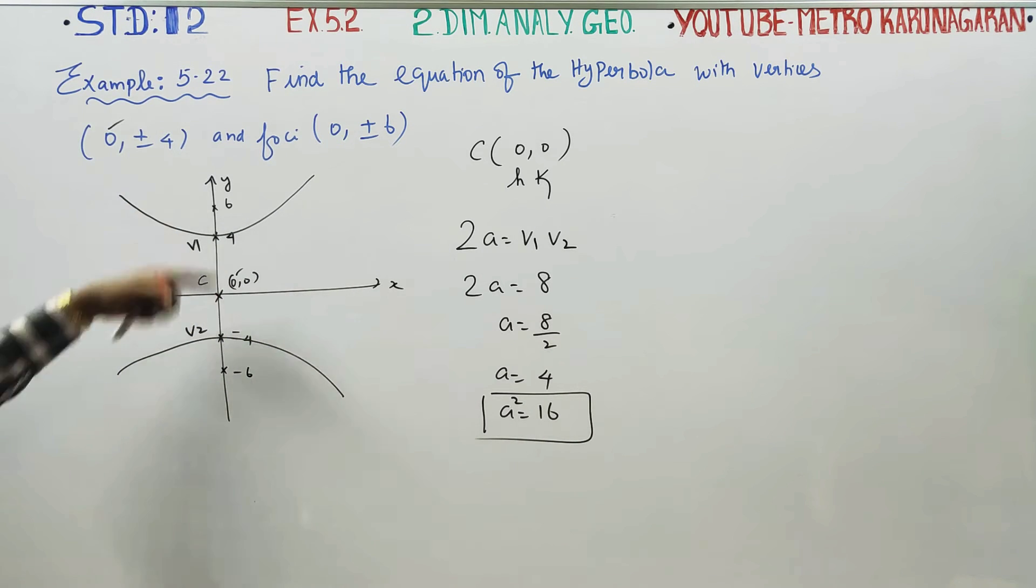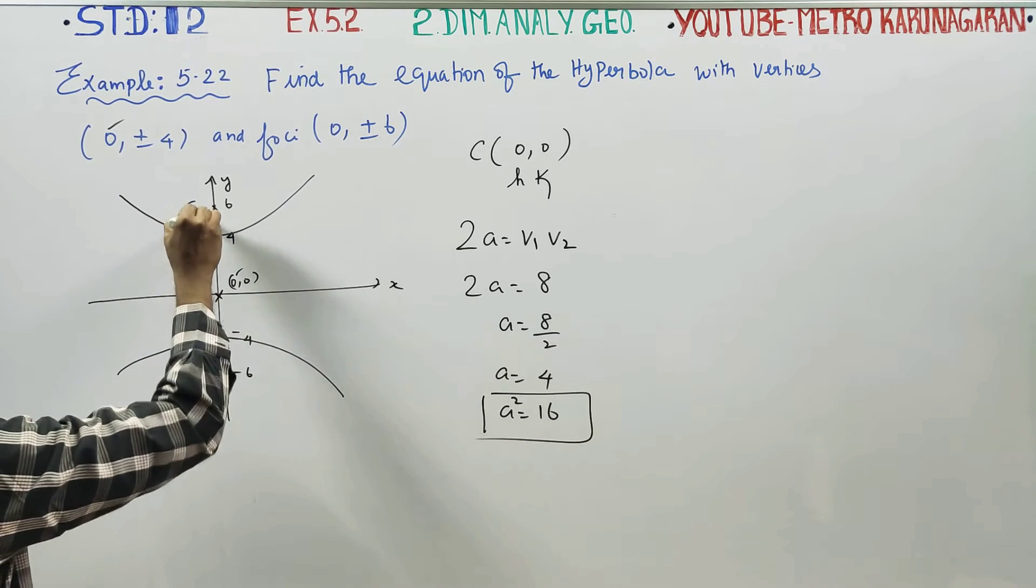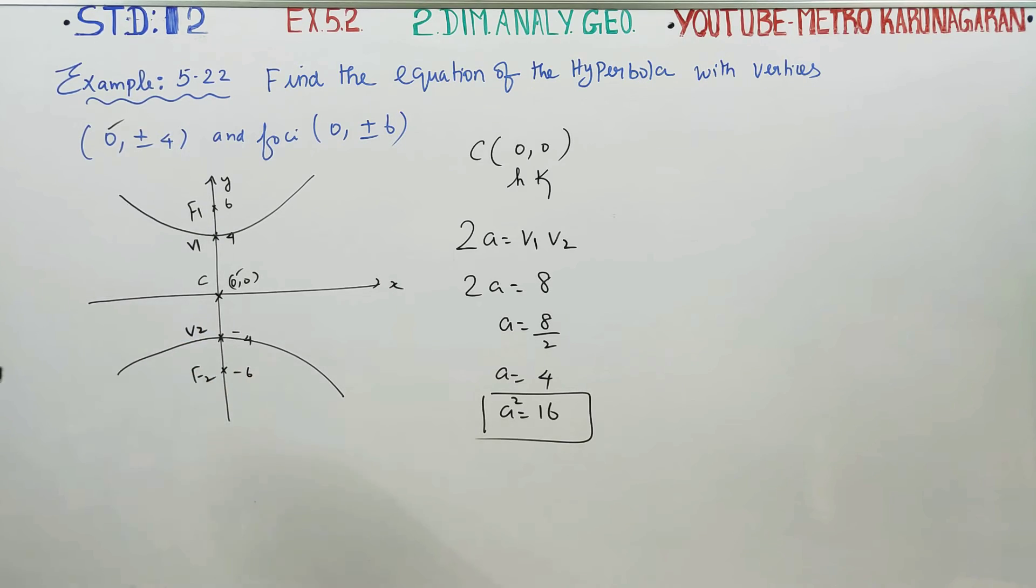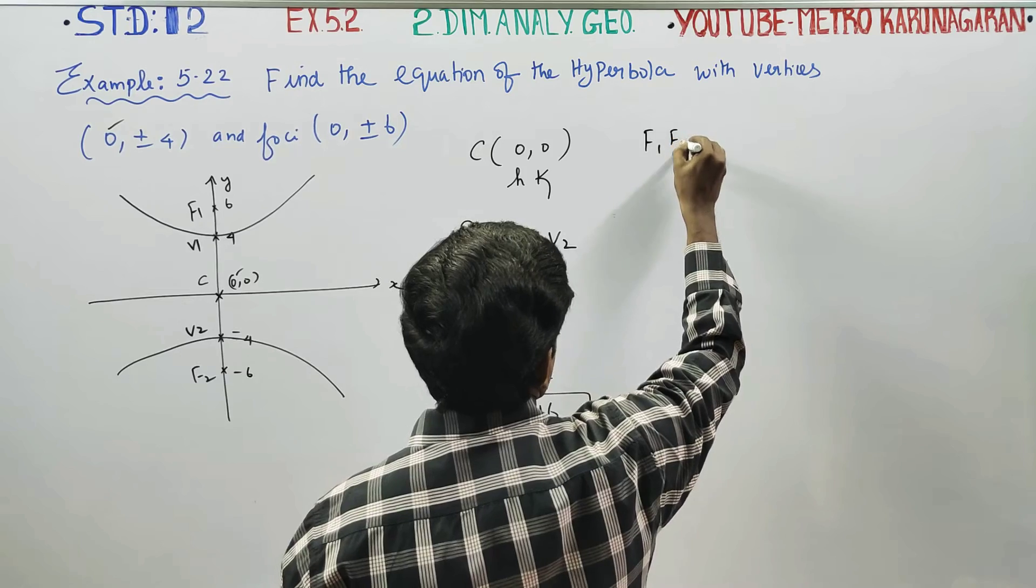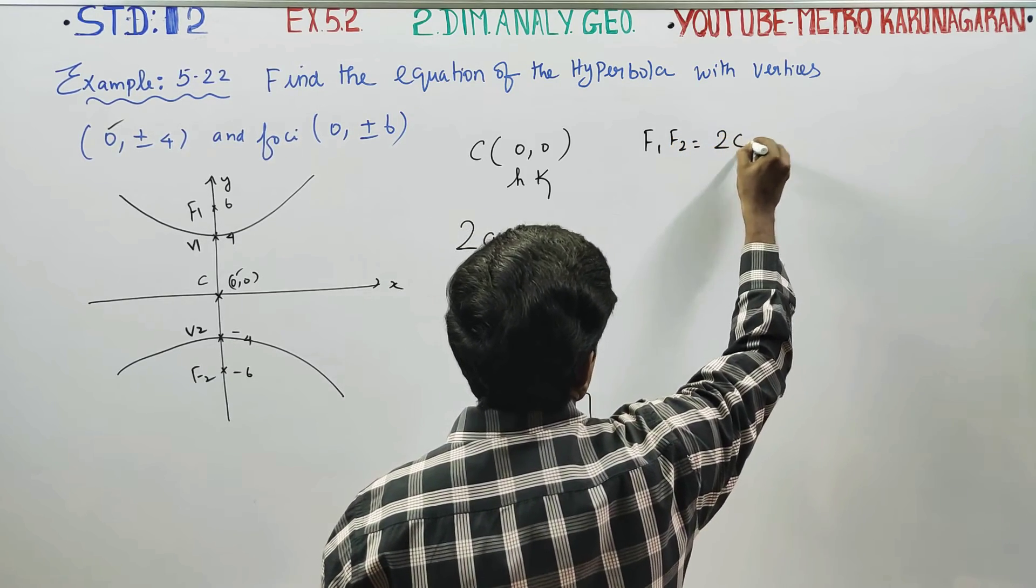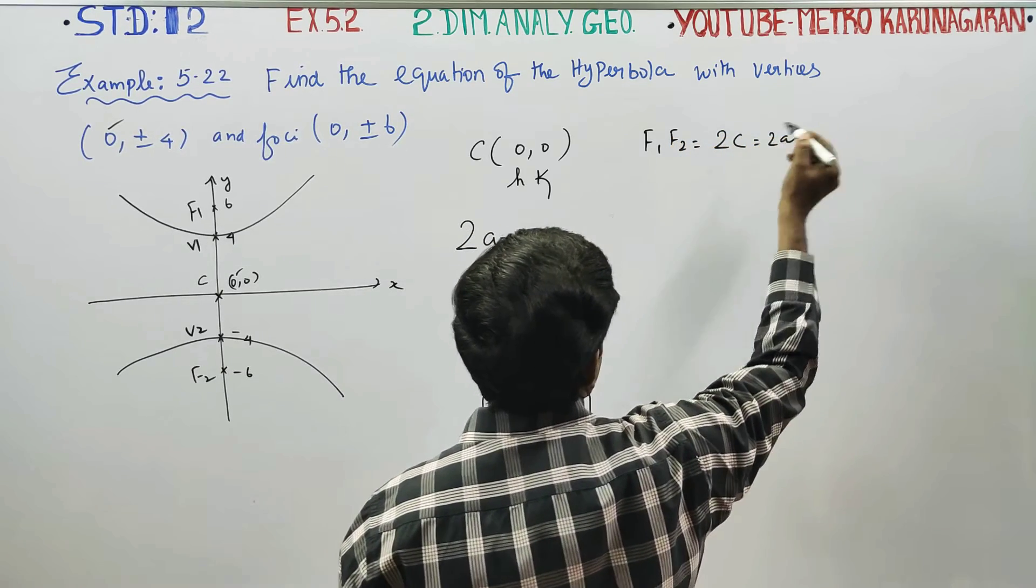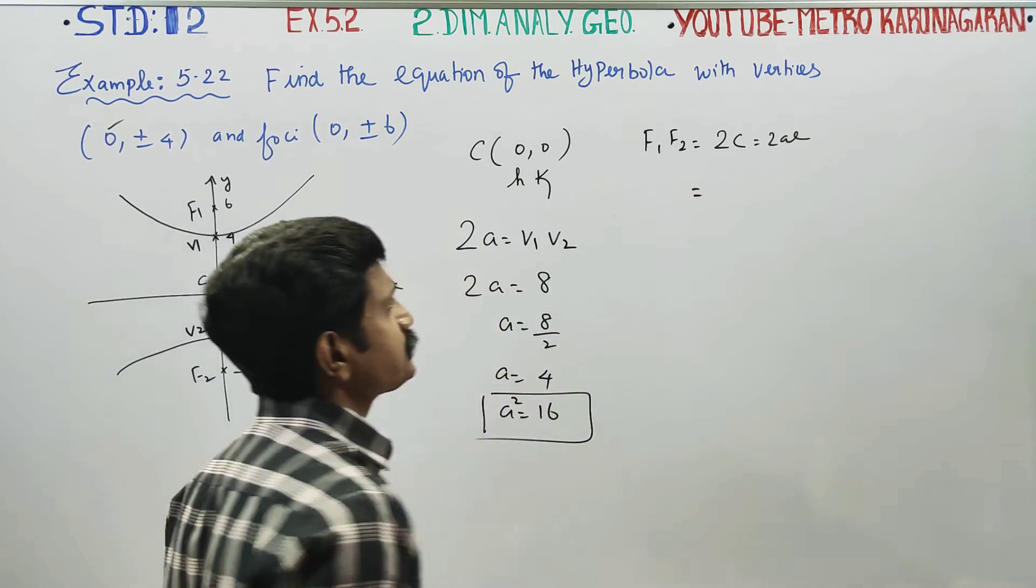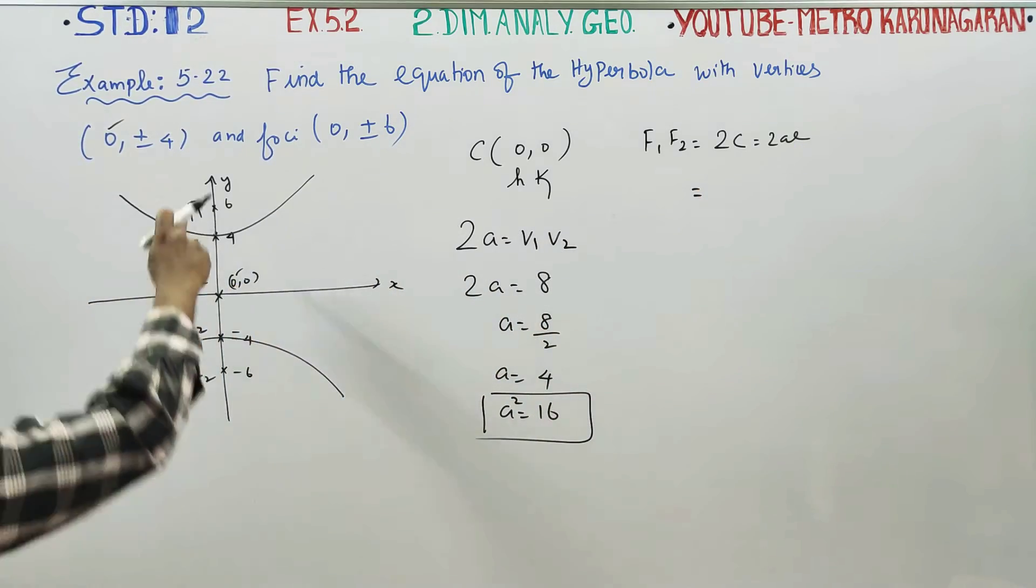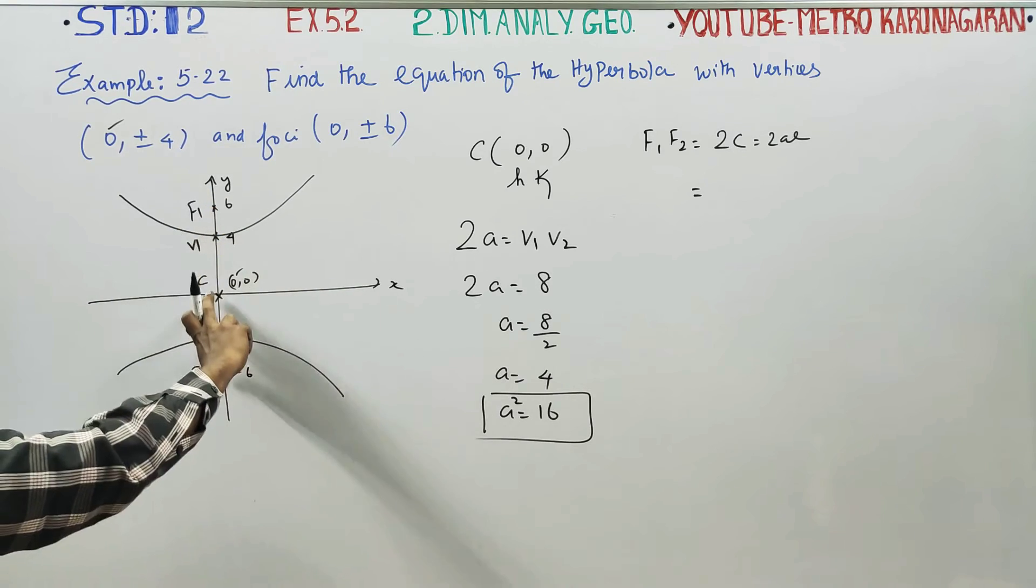I am going to find the distance between the first focus and the second focus, F1, F2. Distance between the two foci, F1, F2 is called as 2C or 2AE. This is 6, distance is 6. Total is 12.